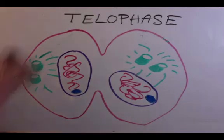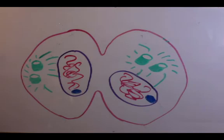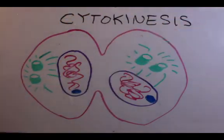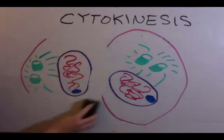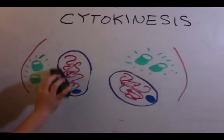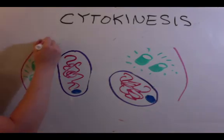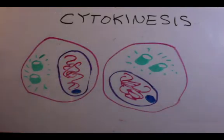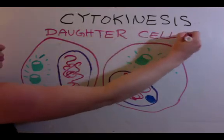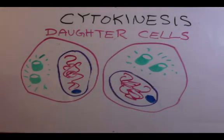At the very end we have cytokinesis, which is cell splitting. At this point we have two completely separate cells with identical DNA — these are called daughter cells, and they're now free to start mitosis from the beginning.